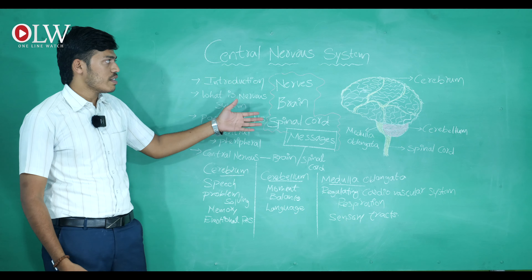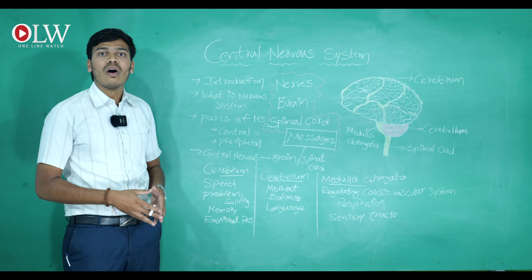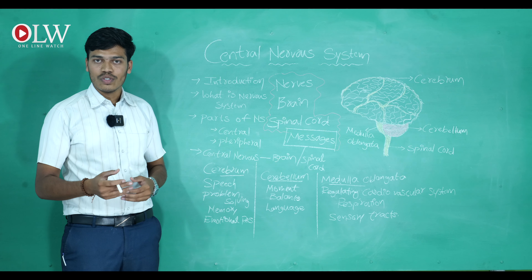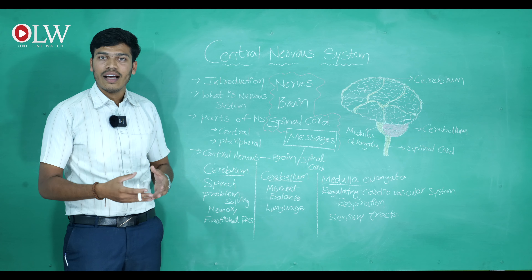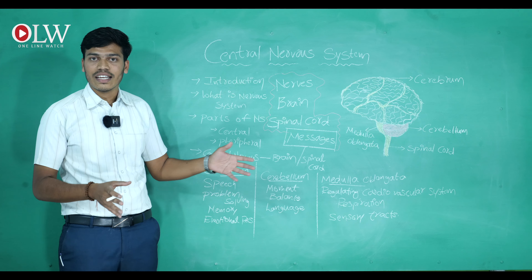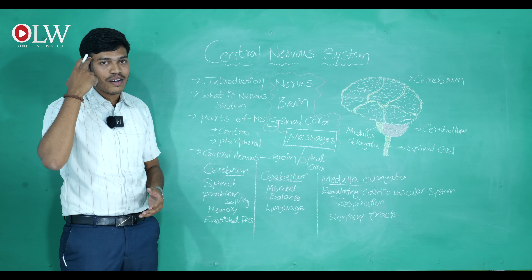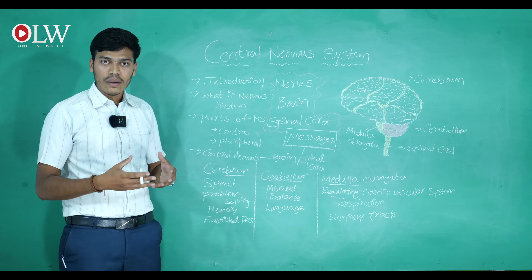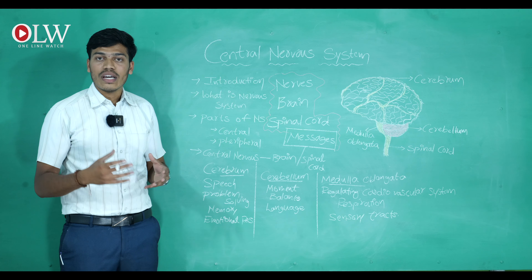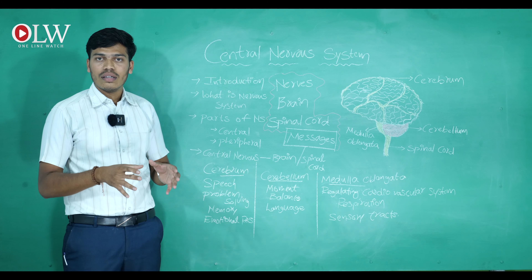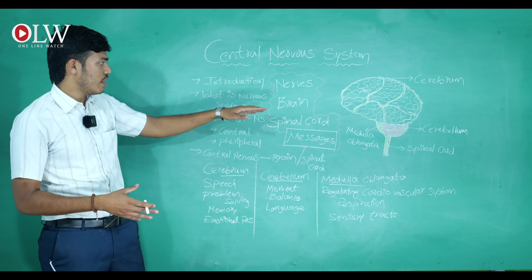The nervous system — right now you are hearing my voice and observing my actions, and all these actions are done by our nerves. Just as the CPU is helpful to a computer, our brain and nerves work like a CPU — a central processing unit. The brain is our body's CPU, and it is covered by a hard shell called the skull. Inside the skull sits the most powerful organ in the human body: our brain.